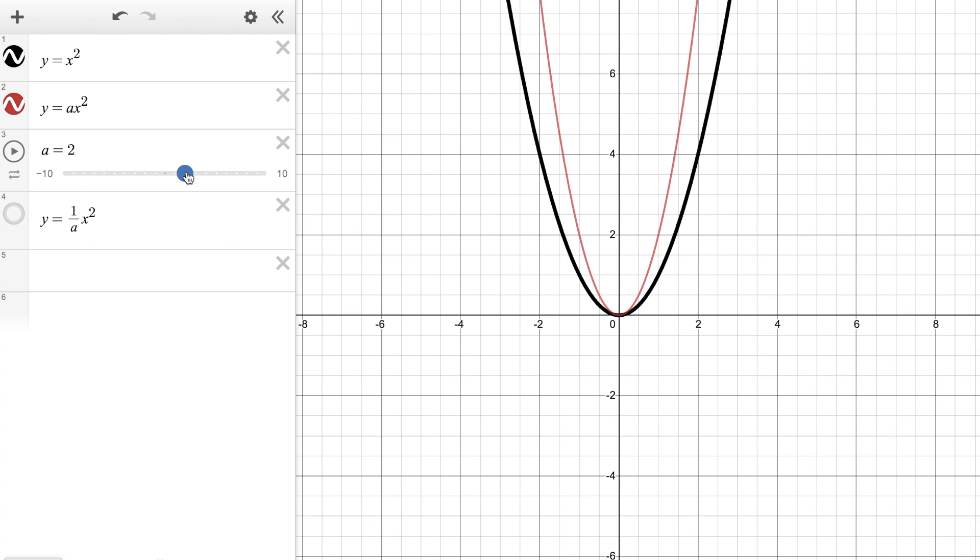If I change the value of a to two for example or three or four you can see that this parabola is becoming thinner and in math we refer to this as a vertical stretch. It's almost as if the base parabola is being grabbed onto and pulled vertically so that it becomes more thin.